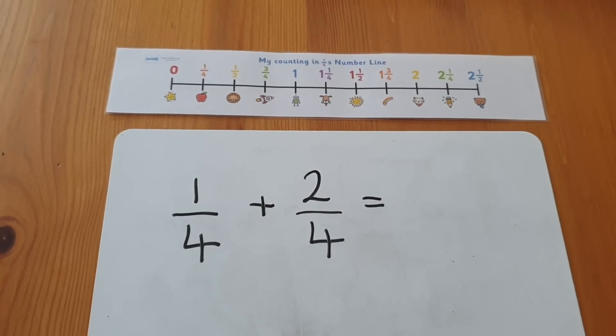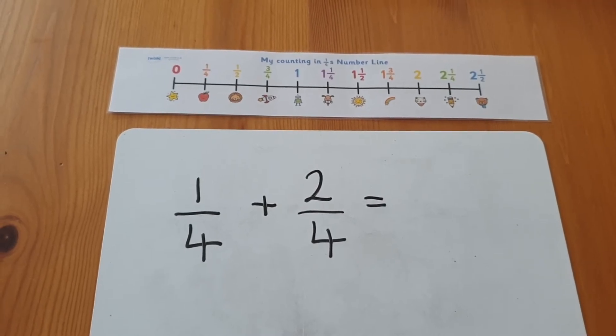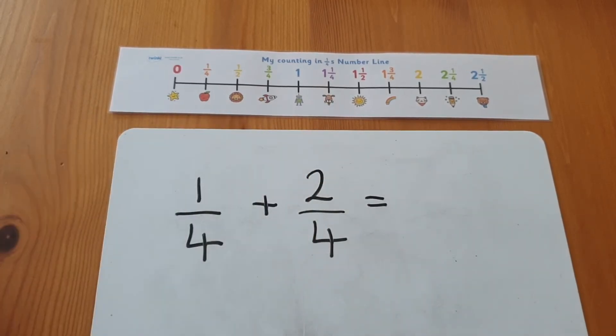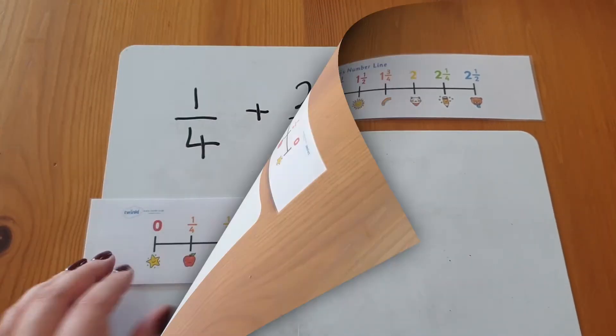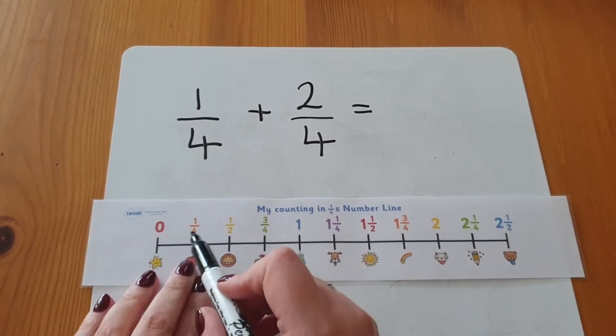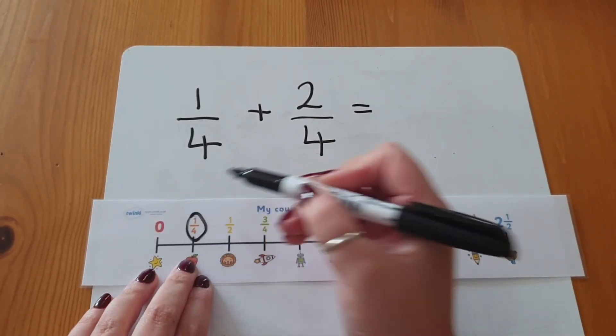When learning to add or subtract fractions, fraction number lines can be really helpful, especially if you laminate them. We can use a whiteboard pen to write on them. So for this question, one quarter add two quarters, I'm going to find my first fraction, one quarter.